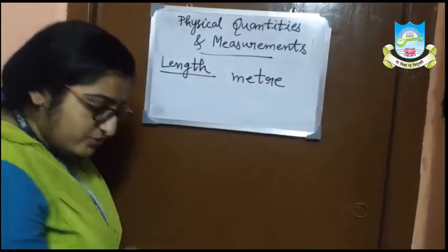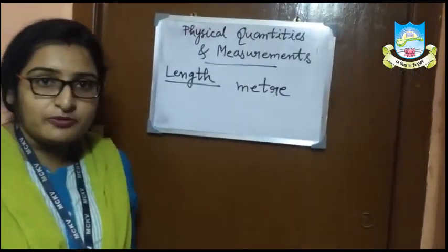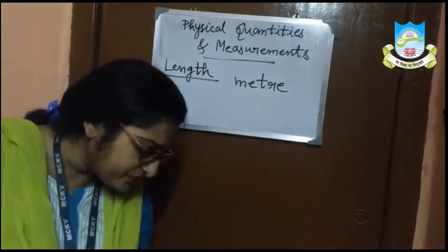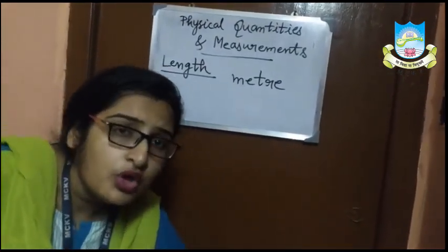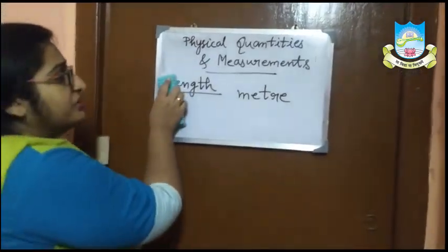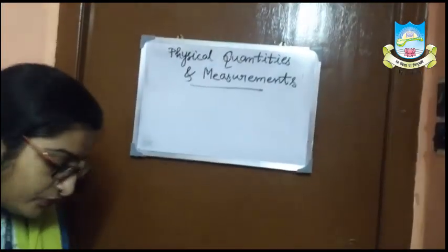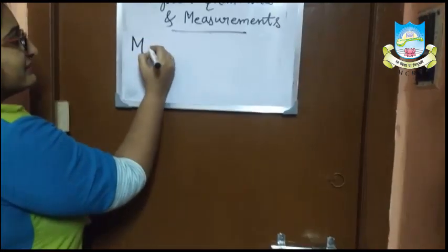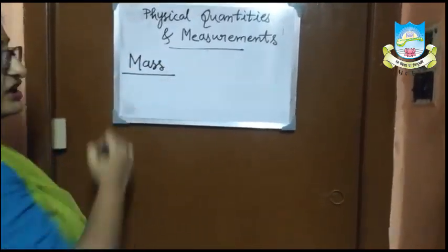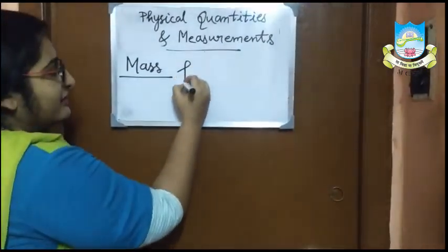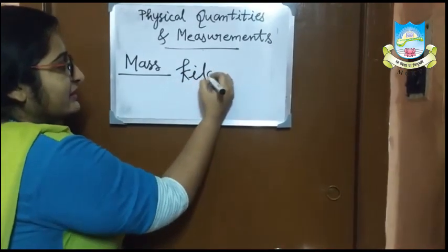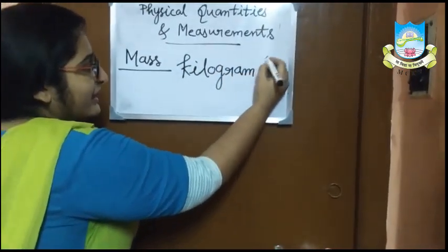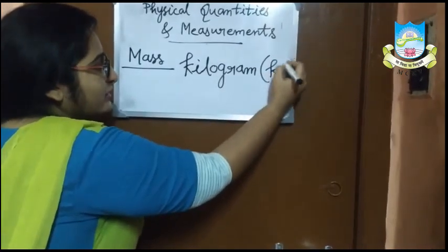Therefore the length of this piece of wool is 15 centimeter. Similarly we can use a measuring tape for measurement of the length of any object. Now we will discuss about mass. Mass is the amount of matter contained in an object. The SI unit of mass is kilogram.